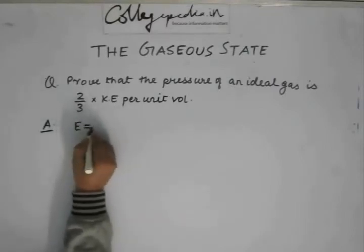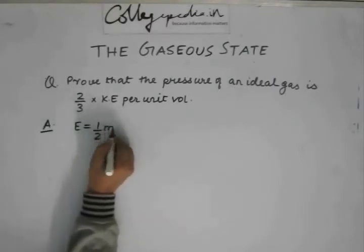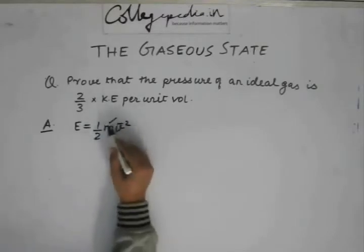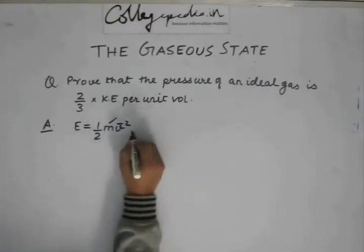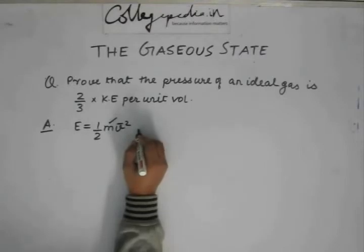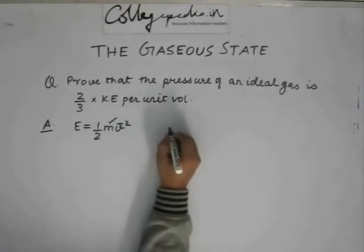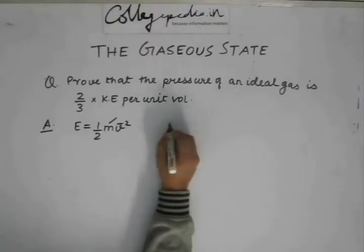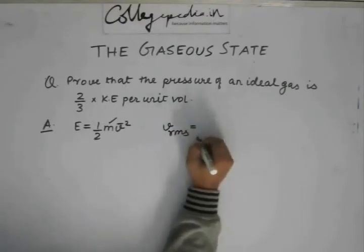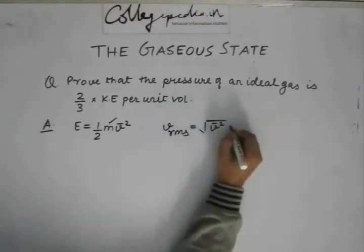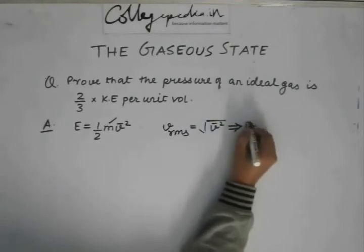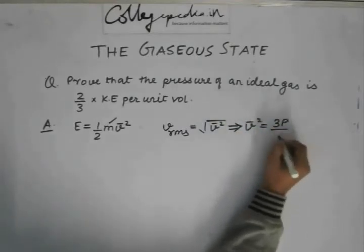We know that E is equal to half M V square. This M here is basically the mass per unit volume. If we look at the rms speed of a gas, Vrms, this is equal to root V square. From this, we say that V square is equal to 3 P by rho.